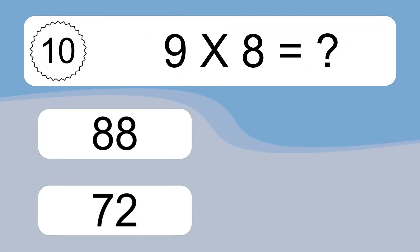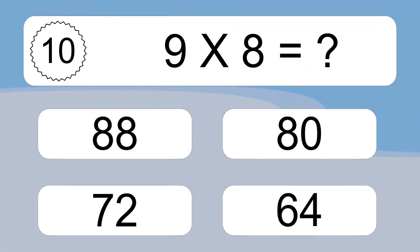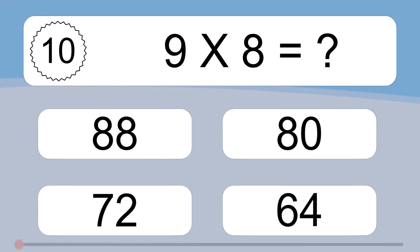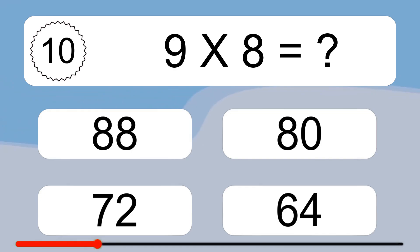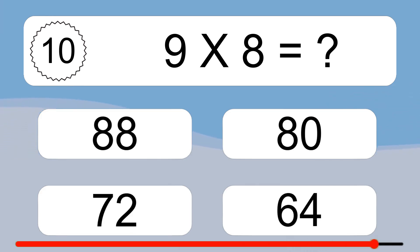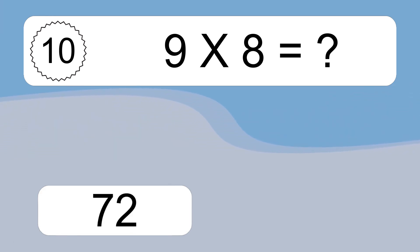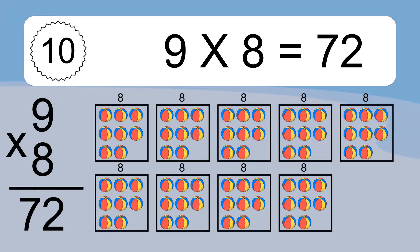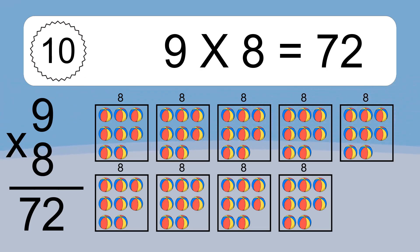9 times 8 equals what? 9 times 8 equals 72. We have 9 boxes, and each box has 8 colorful balls inside. If you count all the balls in all the boxes together, you will have 9 times 8 balls. This equals 72 balls.